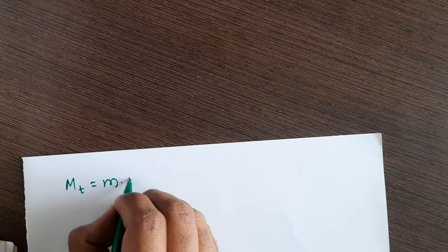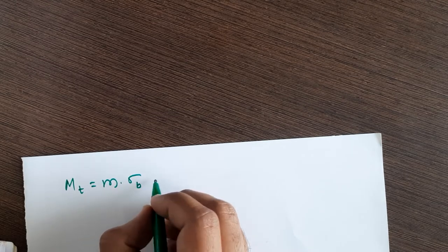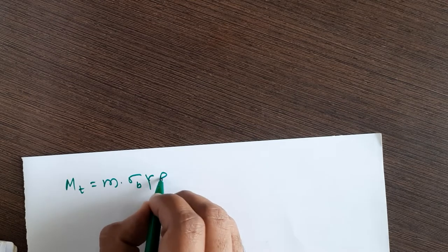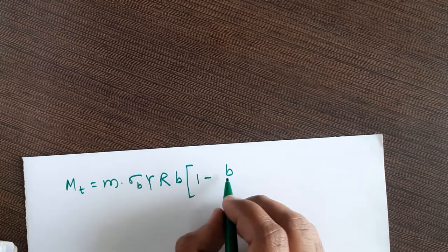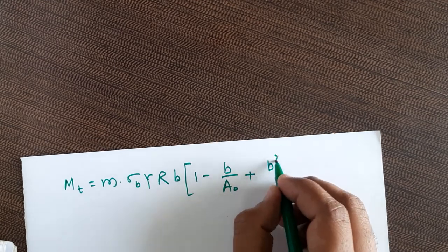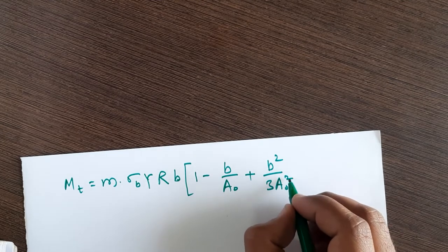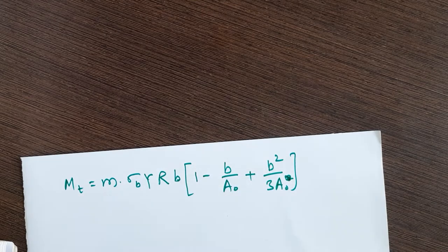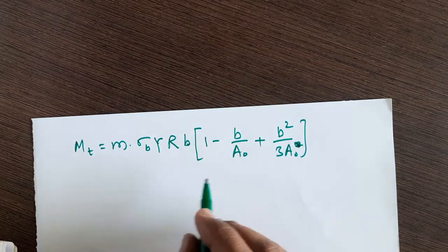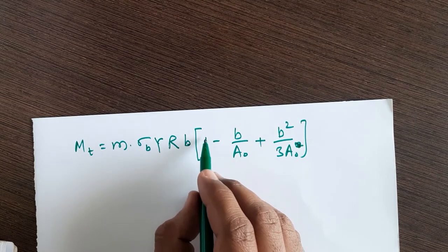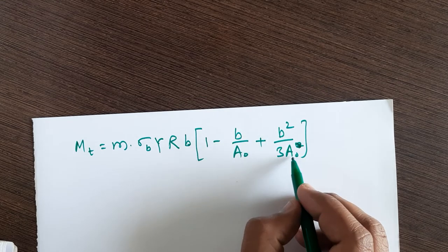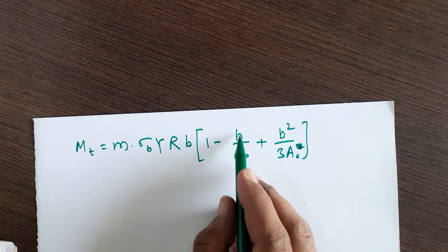Opening the bracket, the equation becomes Mt = m·σb·yr. Taking b common from the bracket and solving directly, you get: 1 - b/a₀ + b²/(3a₀). So only a₀ will be there in the denominator. The original expression before taking b common was: b - b²/a₀ + b³/(3a₀), and after taking b common it becomes: b(1 - b/a₀ + b²/(3a₀)).